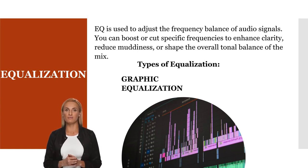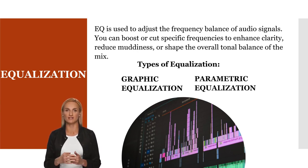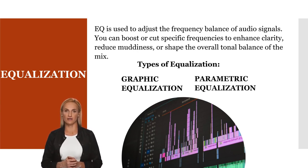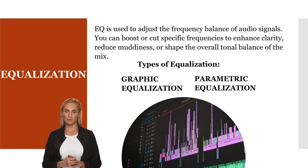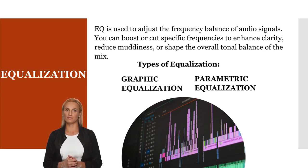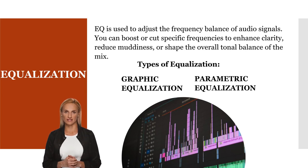Parametric equalization allows you to adjust not only the level, but also the frequency and bandwidth of each equalization band. This provides more precise control over the shape and character of the equalization curve.